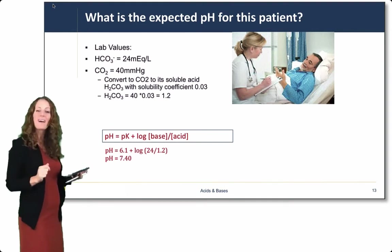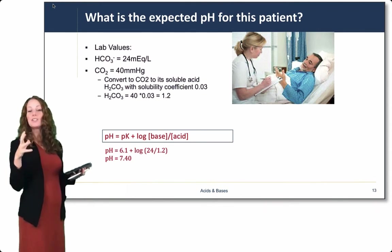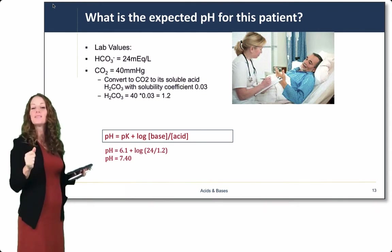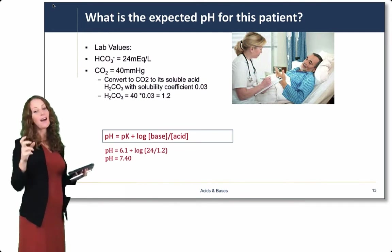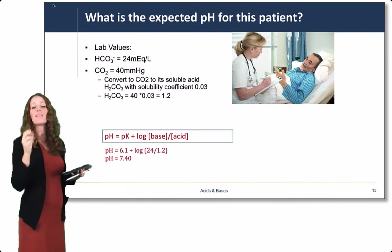So these are normal values. I intentionally gave you something normal, so it's a little easy to do. But you can see he has normal levels of bicarbonate, normal levels of carbon dioxide, and his expected pH would be right in that neutral range.